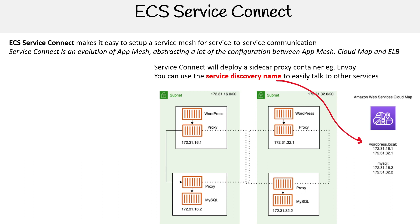You can use the service discovery name to easily talk to other services. Imagine we have a WordPress server here and a WordPress server there. These two IP addresses map to these specific containers, and you can just reference this address to talk to it. So if I'm in this container, I could curl the other one at that address and it would hit that container. Very useful.